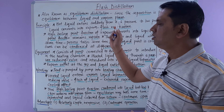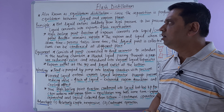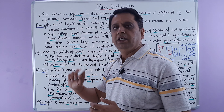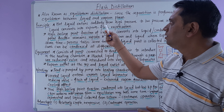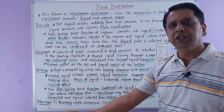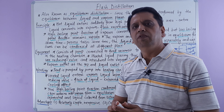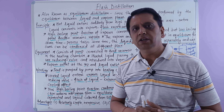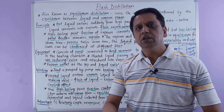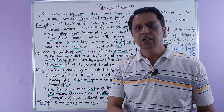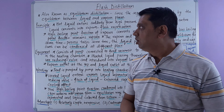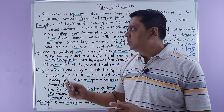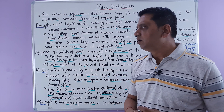Flash distillation is also known as equilibrium distillation, because the separation is performed on the basis of equilibrium between liquid and vapor phases. When the hot liquid enters suddenly from the high pressure zone to a low pressure zone, the whole liquid converts into vapor suddenly — this is known as flash vaporization.